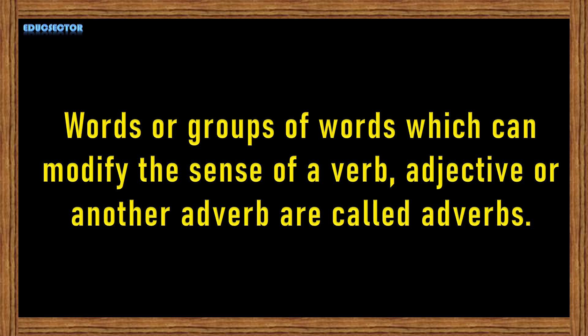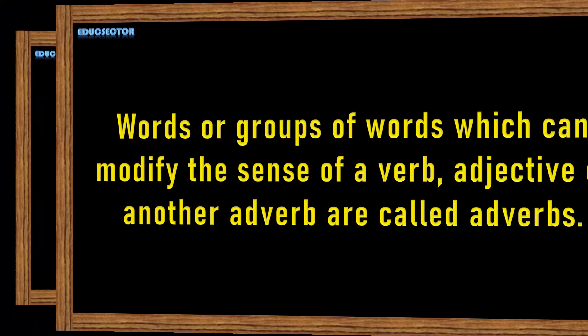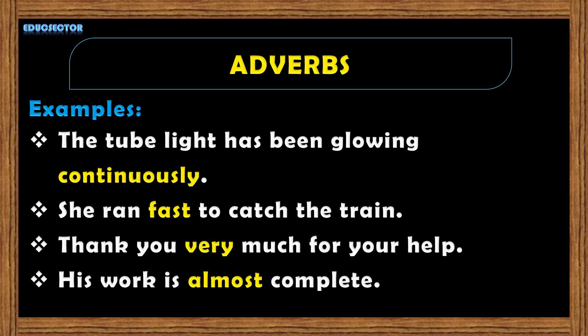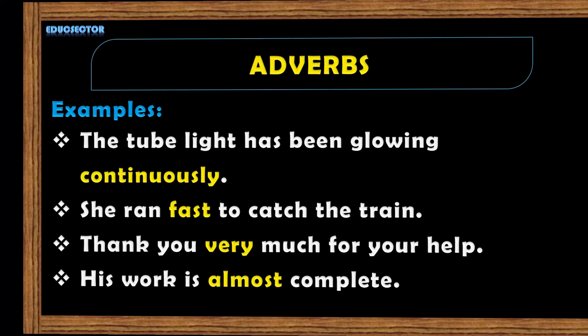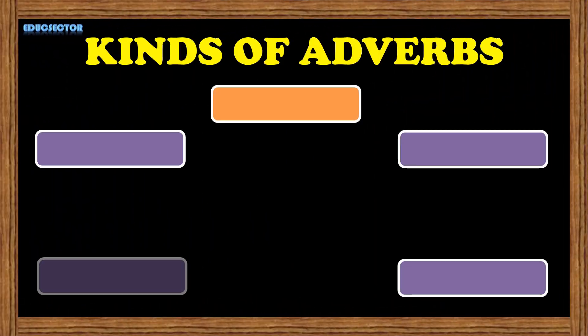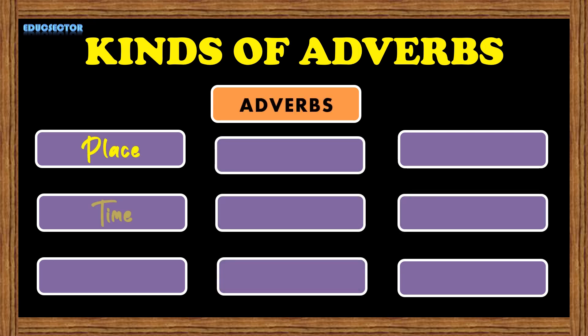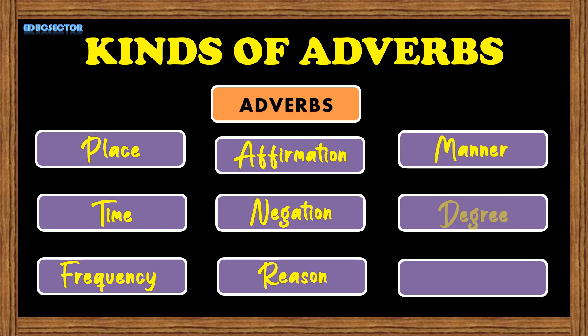Adjective or another adverb are called adverbs. Let us know some examples of adverbs: 'The tube light has been glowing continuously.' 'She ran fast to catch the train.' 'Thank you very much for your help.' 'His work is almost complete.' Here the words continuously, fast, very, almost are all adverbs. The kinds of adverbs include: adverbs of place, time, frequency, affirmation, negation, reason, manner, degree, and extent.